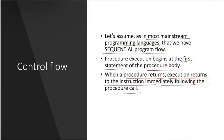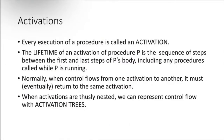When something happens — say after the tenth line — there is some condition, so it jumps to the 50th line of code. Then from the 50th line, due to some process caller, it goes to the 30th line. The program is executing in this non-sequential manner, so this is called non-sequential execution. Every execution of a procedure is called an activation.